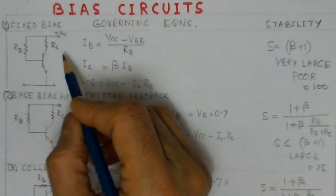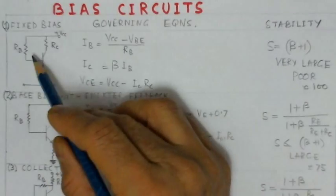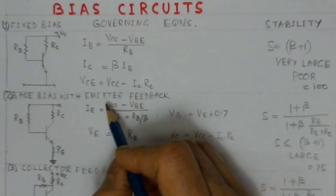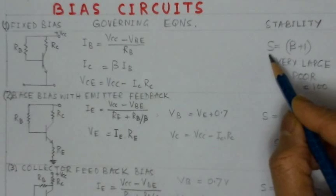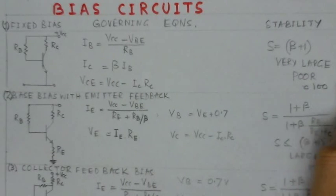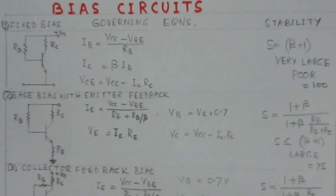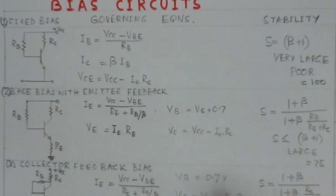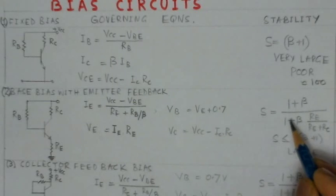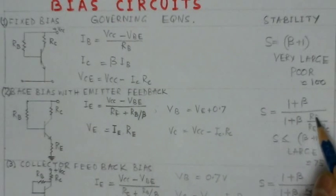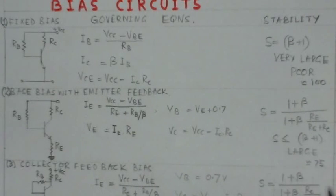Comparing various bias circuits: for fixed bias, IB = (VCC − VBE)/RB, IC = beta × IB, and the stability factor equals beta + 1, which is a very large value — typically around 100. For base bias with emitter feedback, an emitter resistor RE is added, and the stability factor becomes (1 + beta) / (1 + beta × RE/(RE + RC)), which is less than beta + 1, with a typical value around 75.